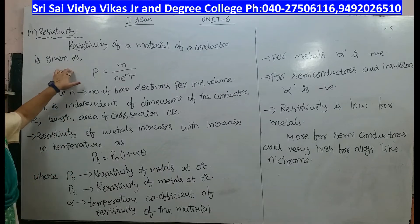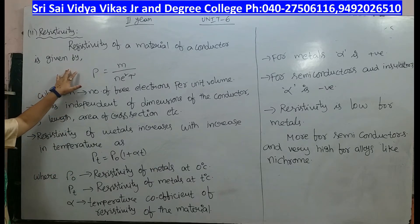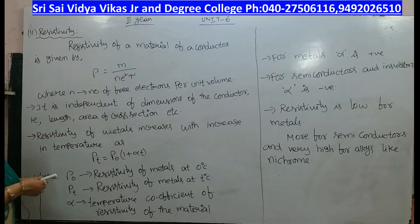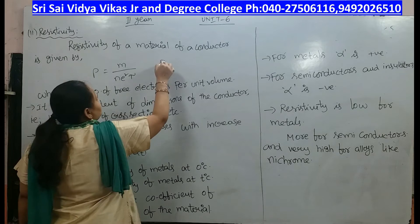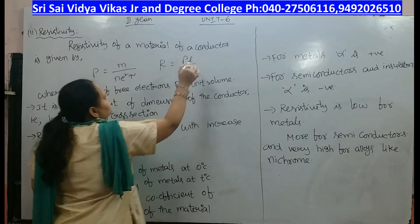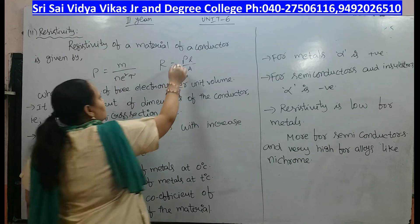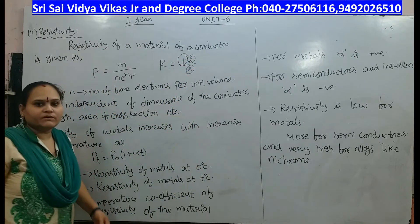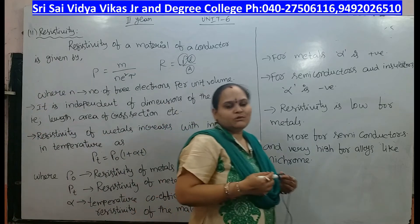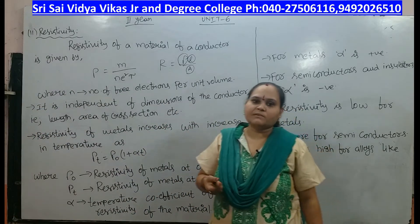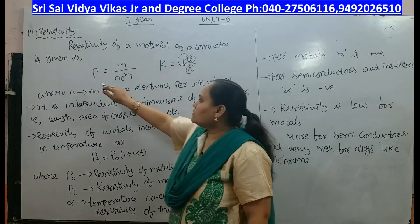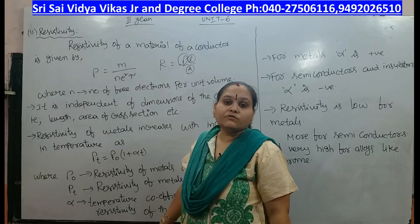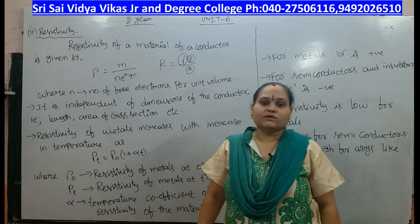What is meant by resistivity? Resistivity of the material of a conductor is denoted by rho. The resistance is given by R equal to rho times L divided by A, where rho is the resistivity, L is the length of the conductor, and A is the area of cross section.